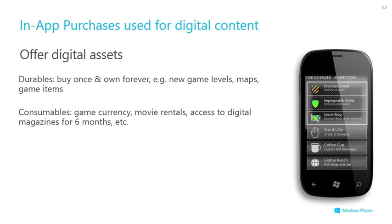There are two kinds of these. Durables — the kind of thing a user buys once and owns forever. A typical example: you sell a version of your game which comes with only one or two levels for free, and then if they want to play further levels they can purchase them. Once they've purchased them, they've got those levels forever — or maps or game items.